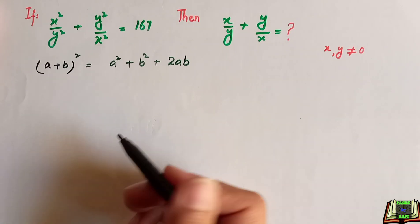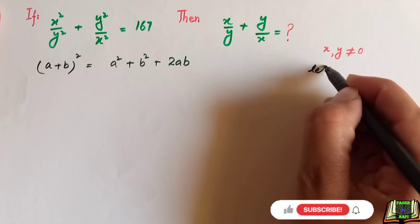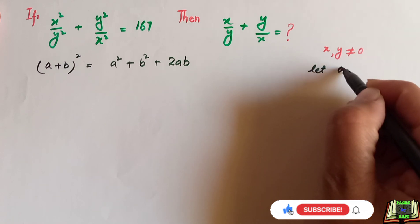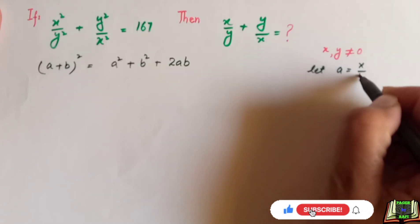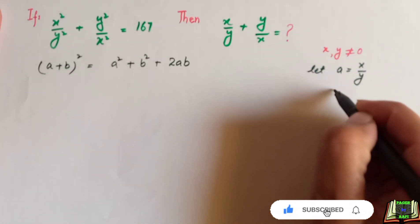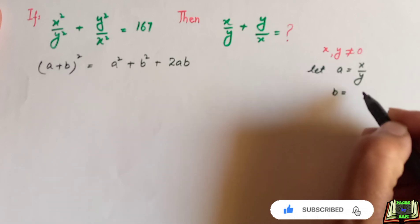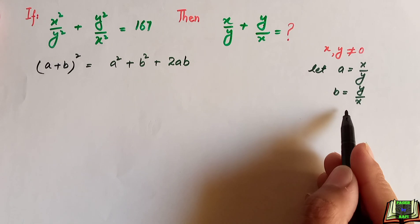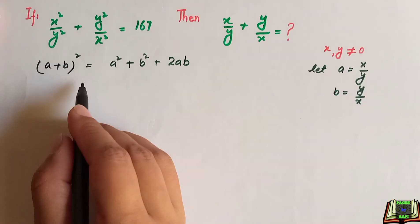Hoping that you know this expression, in this equation we are going to suppose a is equal to x divided by y, similarly b is equal to y divided by x, and we are going to substitute with these values of a and b in this equation.